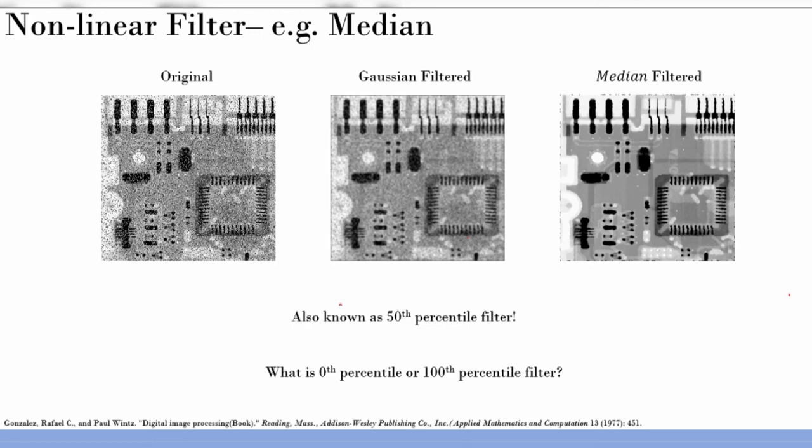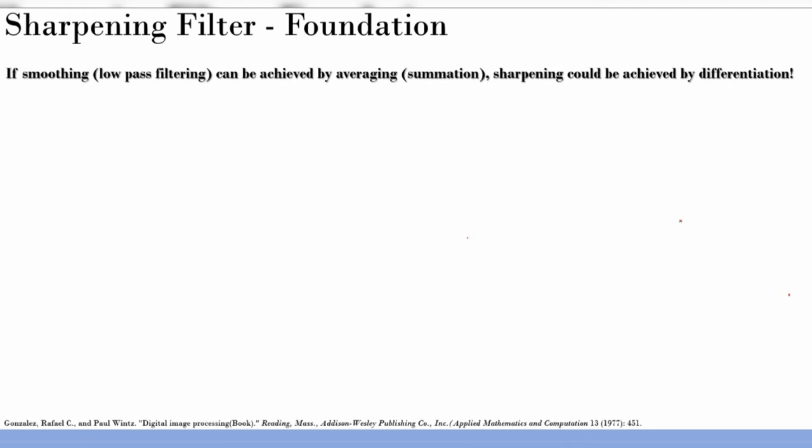To summarize: smoothing filters (averaging, Gaussian, median) are covered. Median is a non-linear filter, robust to spurious peaks, excellent for salt and pepper noise. Now let's move to sharpening. If smoothing is low-pass filtering achieved by averaging or summation, sharpening should be achieved by differentiation. We already saw that subtraction enhances edges, so let's do this systematically.